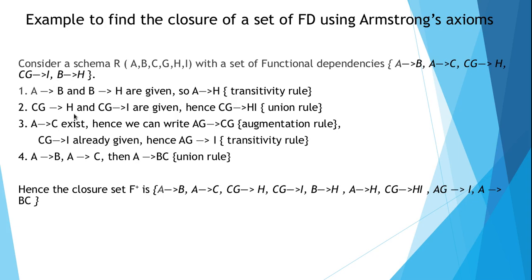In the third step, a to c is already given. Augmenting g on both sides gives ag to cg by the augmentation rule. Then cg to i is already given, so applying transitivity on ag to cg and cg to i, we can derive ag to i. In the fourth step, a to b and a to c are already given, so applying the union rule we can derive a to bc.